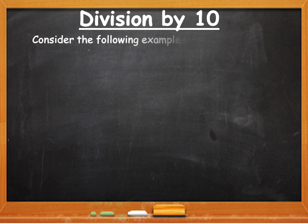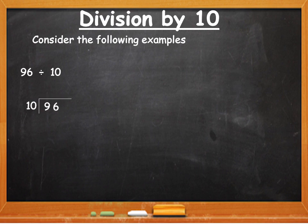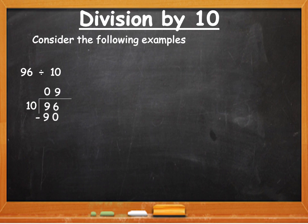Consider the following examples. 96 divided by 10. 96 is a two-digit dividend. We arrange the dividend and divisor. You cannot divide 9 by 10, so you write a 0, then divide 96 by 10. 10 nines are 90, so you write 9, subtract 90, and the remainder is 6. So the quotient is 9 and the remainder is 6.